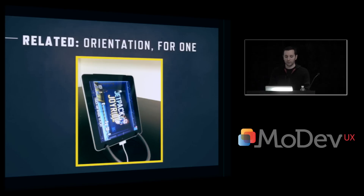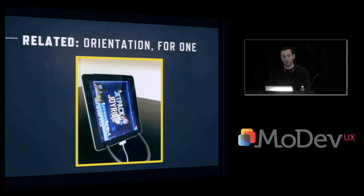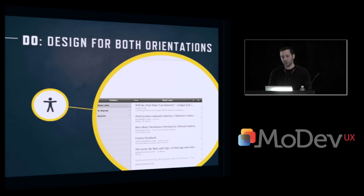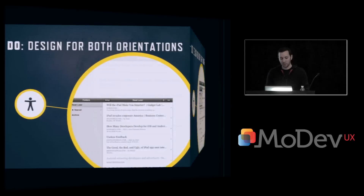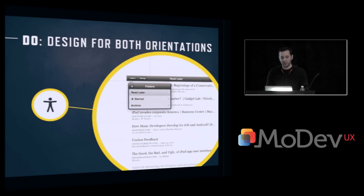A sidebar note related to orientation: make sure that you design for both orientations when it comes to the iPad. Jetpack Joyride — don't play it because you'll never stop — is probably an okay case to have only one orientation, but a lot of people just design one and give up. Make sure you're thinking about both orientations. You can see here an old version of Instapaper where they flip it just like the mail application, and that master pane goes up into a popover which shows all your different views.